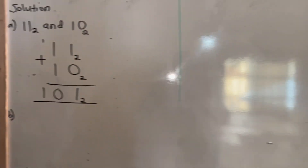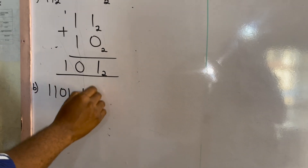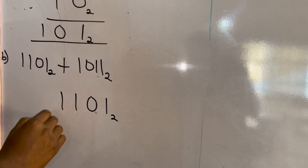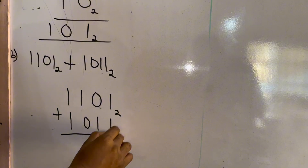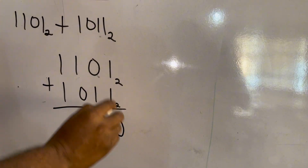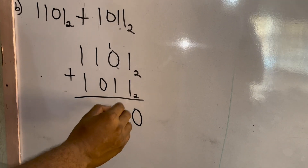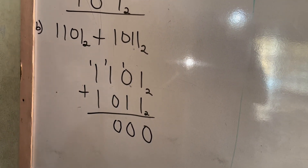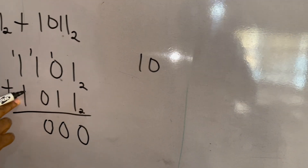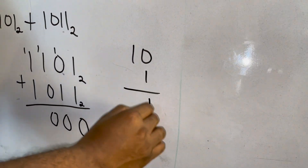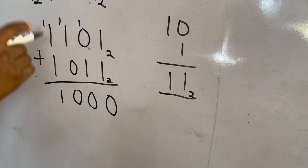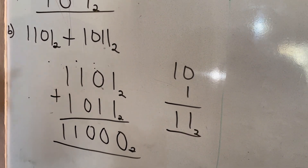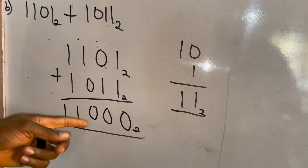The second part says 1101 base 2 plus 1011 base 2. So we have 1101 base 2 plus 1011 base 2. Working through: 1 plus 1 gives 0, carry 1; 1 plus 1 gives 0, carry 1; 0 plus 0 plus carry 1 gives 1, write 1 carry 1; 1 plus 1 plus carry 1 gives 1 1, write 1 carry 1. Therefore 1101 base 2 plus 1011 base 2 equals 11000 base 2.